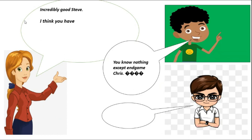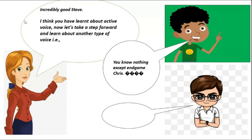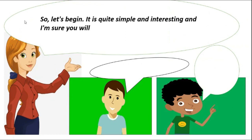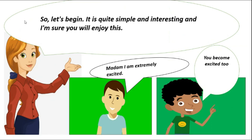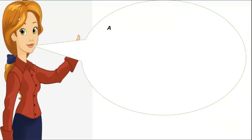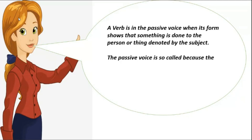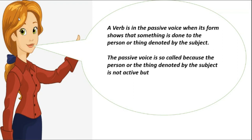I think you have learned about active voice. Now, let's take a step forward and learn about another type of voice — that is passive voice. It is quite simple and interesting and I am sure you will enjoy this. Madam, I am extremely excited. You become excited too easily, my dear Excite Battery. A verb is in the passive voice when its form shows that something is done to the person or thing denoted by the subject.